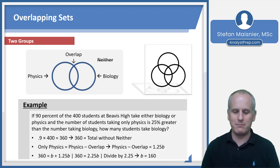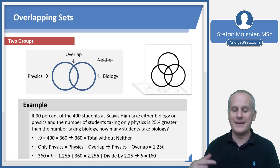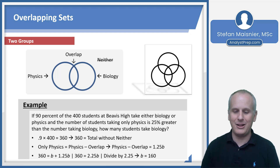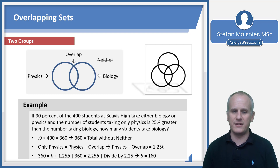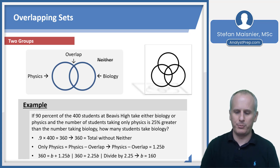We have 360 equal to 2.25B. On the exam, I'd probably write this as 9/4 times B instead of 2.25. But if you divide by 2.25 — or multiply the whole equation by 4 and then divide by 9 — you'll discover that B, the number who take biology, is 160. This uses the group equation as opposed to trying to fill in everything for a Venn diagram, which is probably not an efficient enough process for this exam.